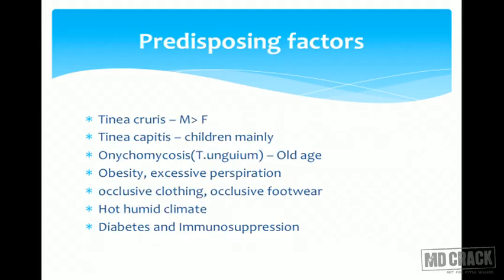Predisposing factors for dermatophytic infections: Tinea cruris is very common in males, while Tinea capitis is a disease of children — because at puberty the sebaceous glands become active and produce sebum, which has antifungal properties protecting the adult scalp. Onychomycosis is a disease of old age. Obesity, excessive perspiration, occlusive clothing, occlusive footwear, hot and humid climate, diabetes, and immunosuppression also predispose.